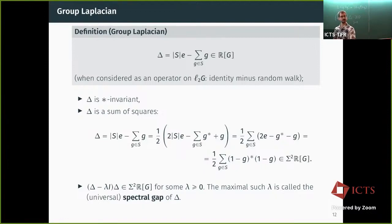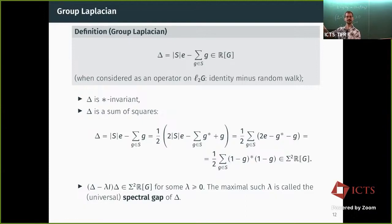But if there exists a λ that is strictly positive such that Δ² − λΔ is non-negative, that is very interesting. I call such a λ the universal spectral gap of Δ, because if I take this Δ and represent it through any representation of my group, then λ gives a lower bound for the spectral gap in that representation.